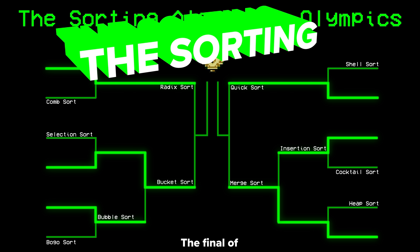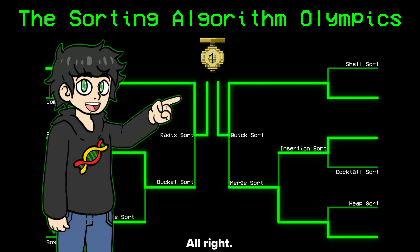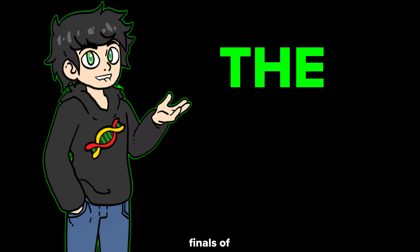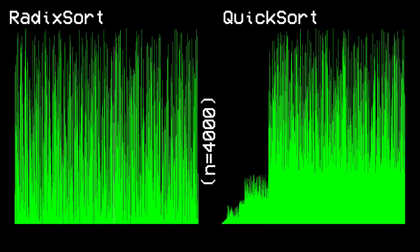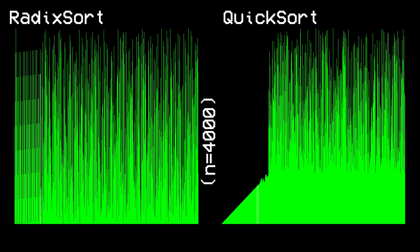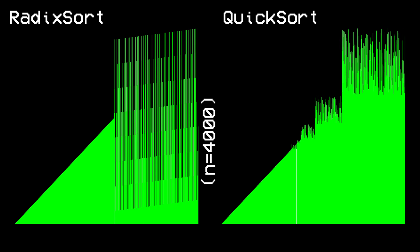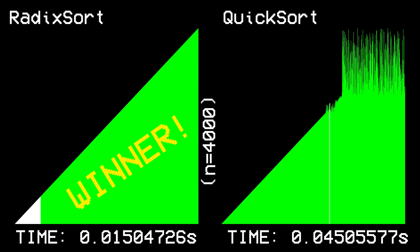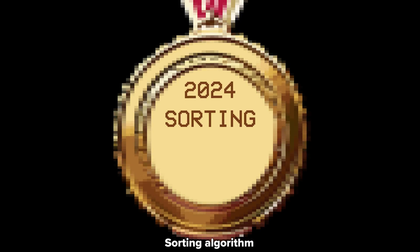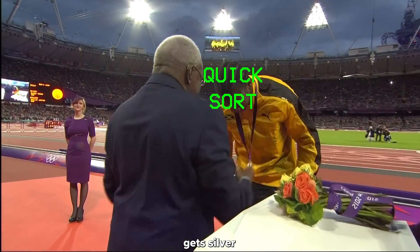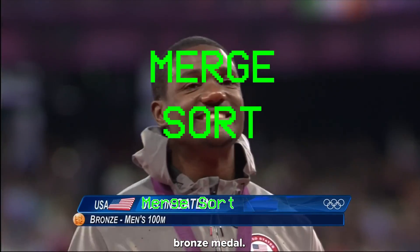The time has come — the final of the sorting algorithm olympics: radix sort versus quicksort. Without further ado, here are the finals — three, two, one, go! Congratulations to radix sort on becoming the sorting algorithm olympic gold medalist! Quicksort gets silver, and merge sort was actually faster than bucket sort, so it gets the bronze medal.